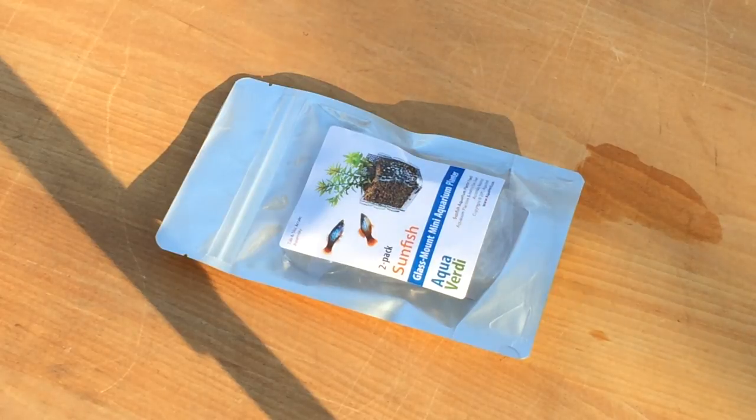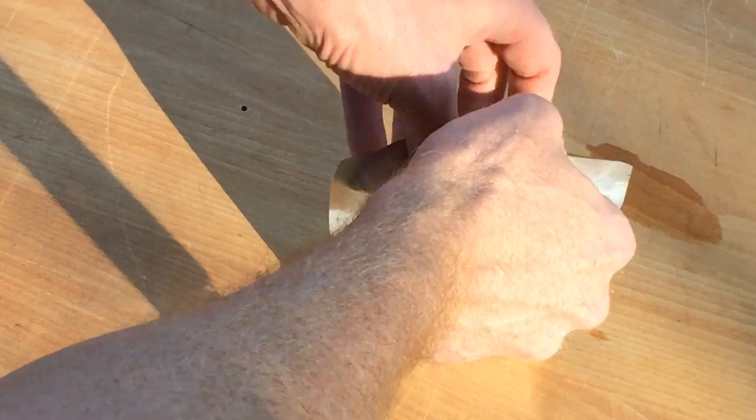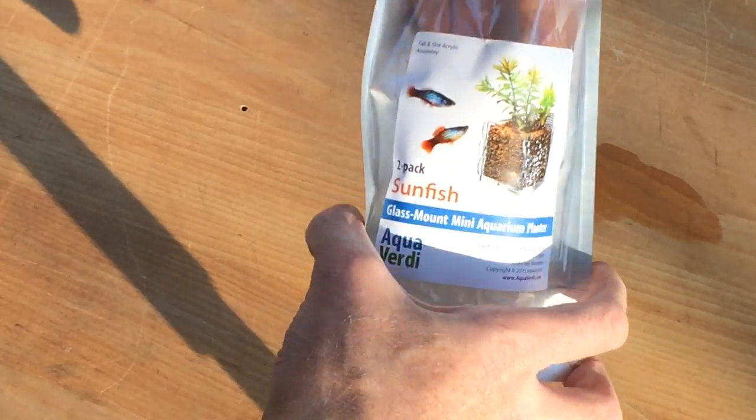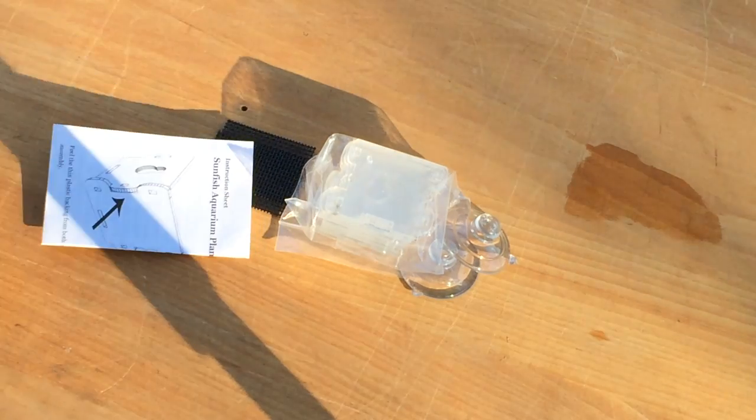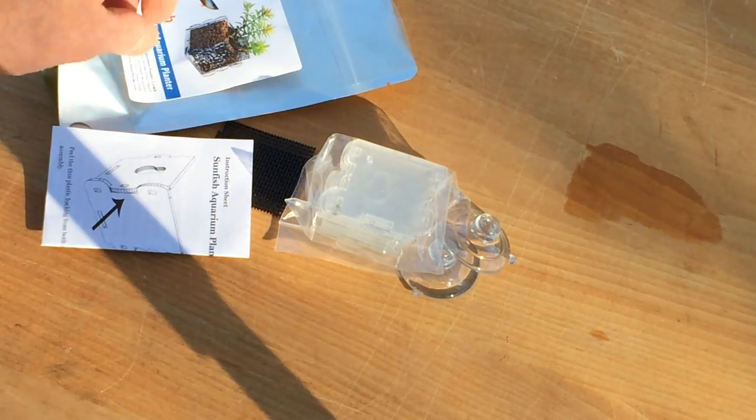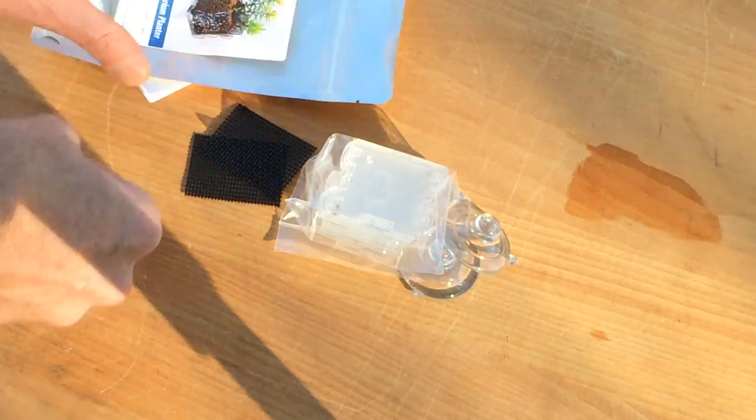The Sunfish Aquarium Planter is packaged as a 2-pack in this branded foil pouch. There are a few different items in each 2-pack including a detailed instruction sheet. Be sure to review both sides of this instruction sheet before assembly and as you put the planters together.